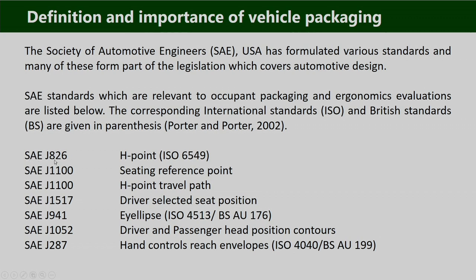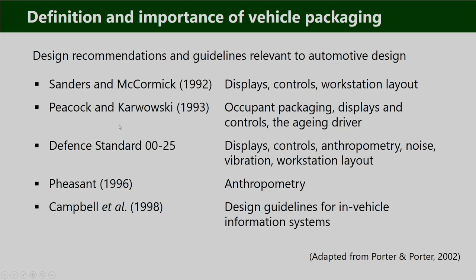The relevant standards include: SAE J826 for H point (also ISO 6549); SAE J1100 for seating reference points and H point travel path; SAE J1517 for driver selected seat position; SAE J914 for eye ellipse (also ISO 4513 and British Standard 176); SAE J1052 for driver and passenger head position contours; SAE J287 for hand controls reach envelopes (also ISO 4040 and British Standard 199). Apart from these, other design guidelines in literature such as Sanders and McCormick 1992 (displays, controls, workstation layout) and Peacock and Karwowski 1993 (occupant packaging, display and controls) are also available.